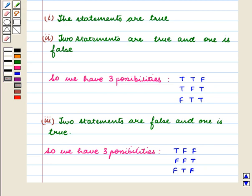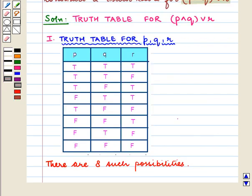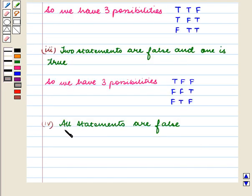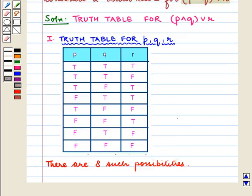So again we have three possibilities: T, F, F; F, F, T; and F, T, F. So in the next three rows: P is T, Q is F, R is F; P is F, Q is F, R is T; and P is F, Q is T, R is F. The last possibility is that all statements are false. So in the last row P, Q and R all of them are F.